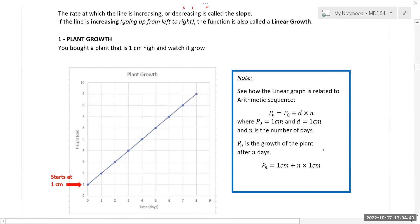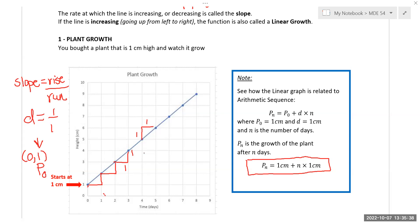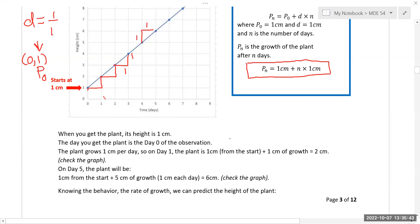Say we buy a plant that is 1 centimeter high and we watch it grow. At its initial value it was 1 centimeter, then after each day it grew 1 inch. That's 1 over 1, so P_0 is 1, d is 1, and n is your number of days. What we're going to grab off the graph is the slope: rise over run. How much did I go up? One. How much did I go over? One. Then we grab that initial value or P_0, so I've got my d and my P_0, and I can put it together into the equation.